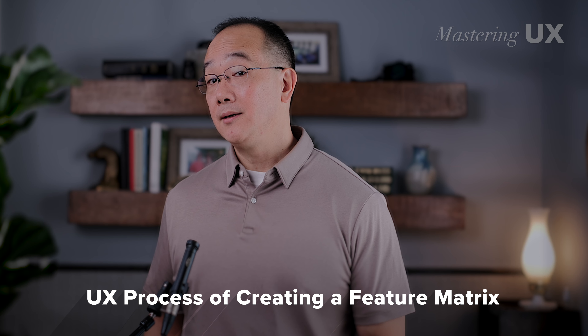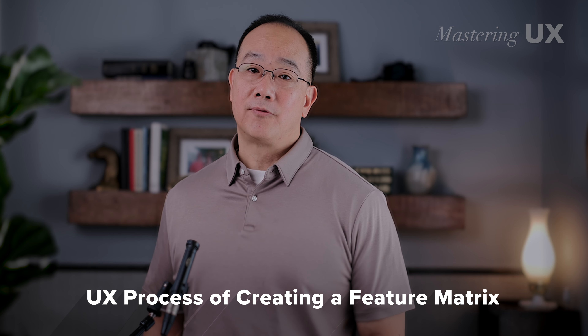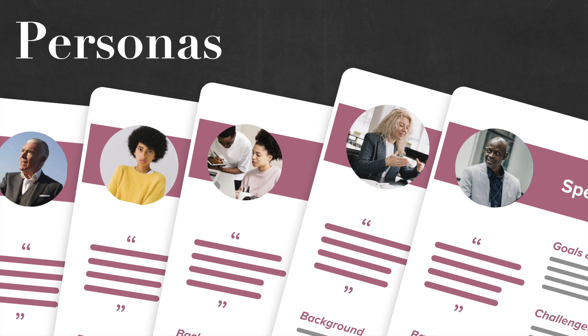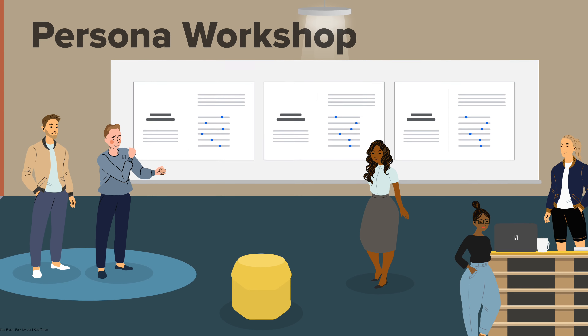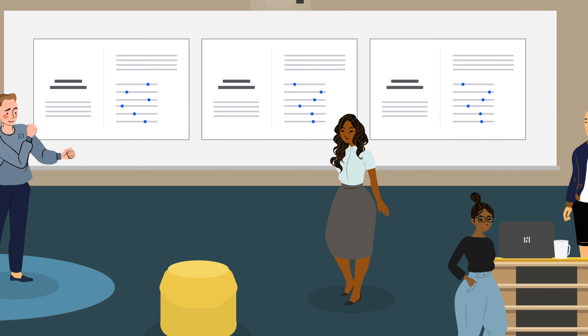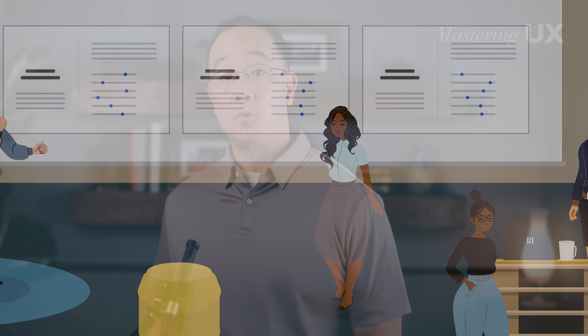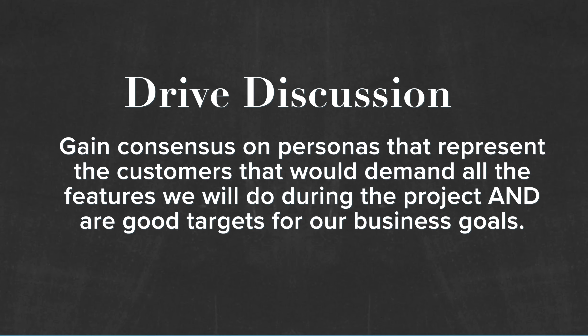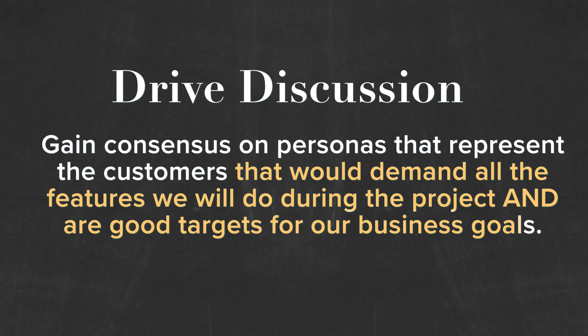So let's talk about the UX process of creating persona-weighted feature matrices. Although I showed you the feature matrix in a spreadsheet, I still need to show you how to create this matrix collaboratively with the business. First, you're going to create your ad hoc personas. Before diving into the feature matrix, you'll need to have your ad hoc personas ready — personas can be derived from stakeholder interviews, customer interviews, or workshops. I like to do a three-hour persona workshop where I generate stakeholder buy-in and personas. I allow the stakeholders to modify and add to the personas that I've already done some research on. During this time, I give an introduction to what the criteria might be to make a good persona set, and try to drive that discussion towards a consensus on personas that represent the customers who would demand all the features for the project and are good targets for our business goals.